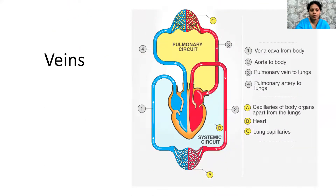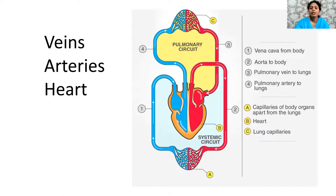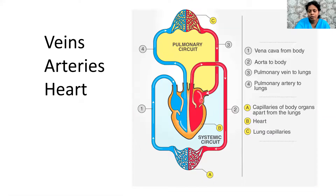The main parts of the circulatory system are the veins, arteries, and heart. The veins are the blood vessels which collect the deoxygenated blood from all body parts towards the heart, except the pulmonary veins, which collect oxygenated blood from the lungs to the heart. The arteries are the blood vessels which transport blood from the heart to all other body parts, except the pulmonary artery, which carries deoxygenated blood from the heart towards the lungs.